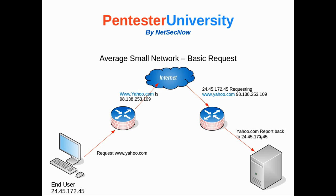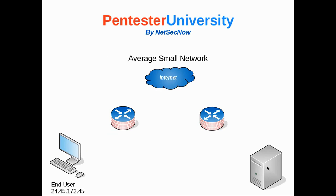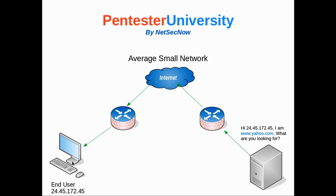The server is told to report back to 24.45.172.45 — our end user. The server responds with a SYN-ACK, the second set of packets in the TCP three-way handshake. It says, hi 24.45.172.45, I am yahoo.com — what are you looking for? That's your SYN-ACK packet. We didn't show it in the animation, but the third packet is the ACK packet, sent from the end user back to the server acknowledging receipt of the server's acknowledgement.